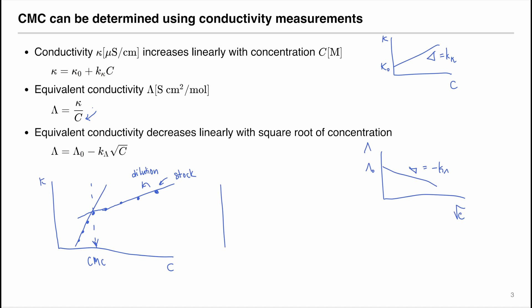Similarly, with equivalent conductivity, we can also perform such graphs, but on the x-axis, we use the square root of conductivity. For example, at higher concentrations, we expect to have some sort of slope. This is the stock solution, and we do serial dilutions.